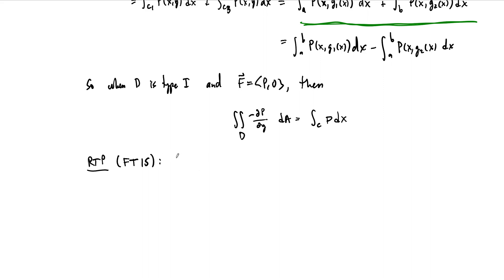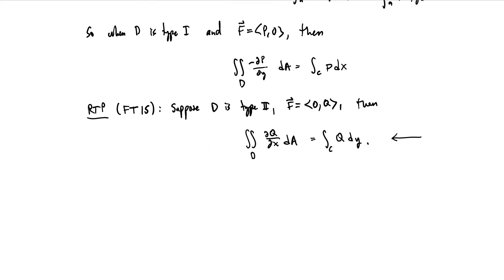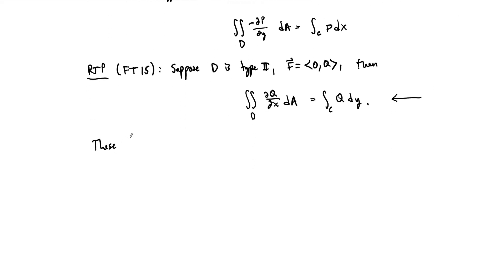You should do the same thing here: suppose that D is a type 2 region and that F equals (0, Q), zeroing out the P component, and then show that the double integral over D of dQ/dx dA equals the path integral of Q dy. Once you've proved this, then together with the first identity, this will prove Green's theorem on what we've called our simple regions. The argument for this second one is totally analogous, and it's a good exercise for you to do it.